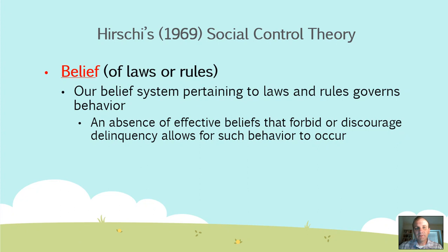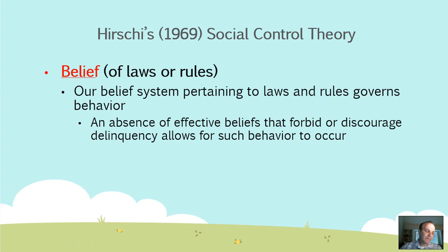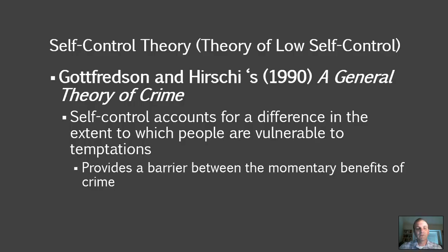The final concept within social control theory is belief — a belief in the laws and rules that govern society. Our belief systems pertaining to laws and rules matter. In the absence of those beliefs that forbid or discourage delinquency, such behavior is allowed to occur. If people don't believe in or agree with the rules of society, that opens the door and increases the chances for delinquency or criminal activity. Those are really the four main concepts — A, B, C, I: attachment, belief, commitment, and involvement — associated with Hirschi's 1969 social control theory, one of the most widely tested criminological theories and highly relevant to this day.